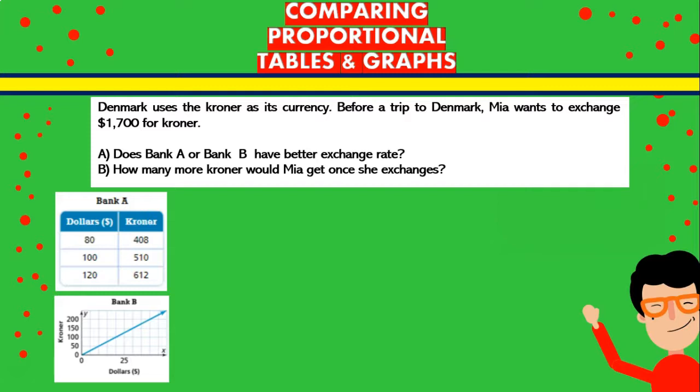In this case we have two banks, Bank A and Bank B, and they apparently have different options in terms of amount of money that Mia is going to receive when she exchanges her $1,700 for kroner. We're going to find out in the table the value for k, and we're going to find the value for k also in the graph. Let's begin with Bank A.